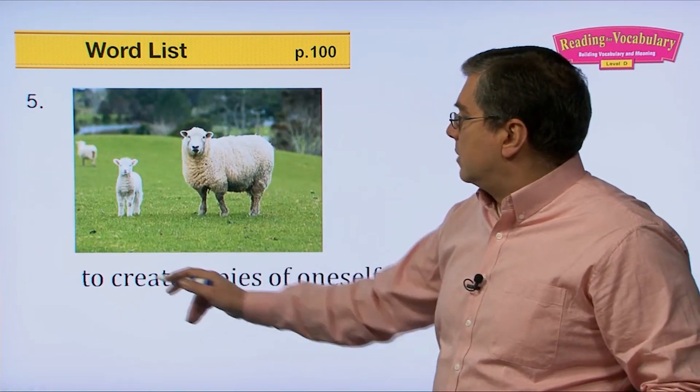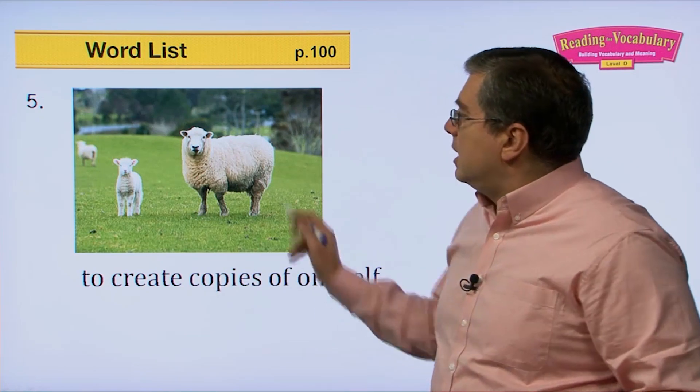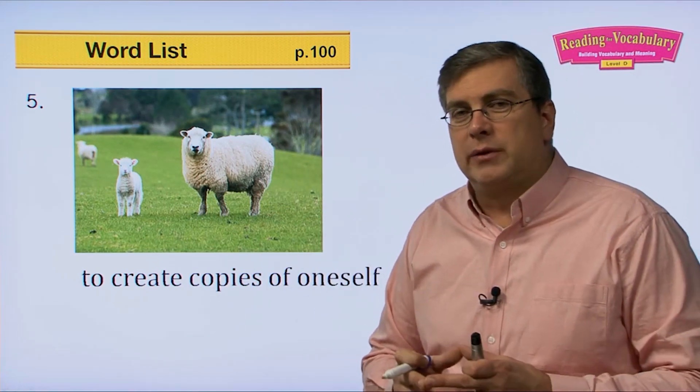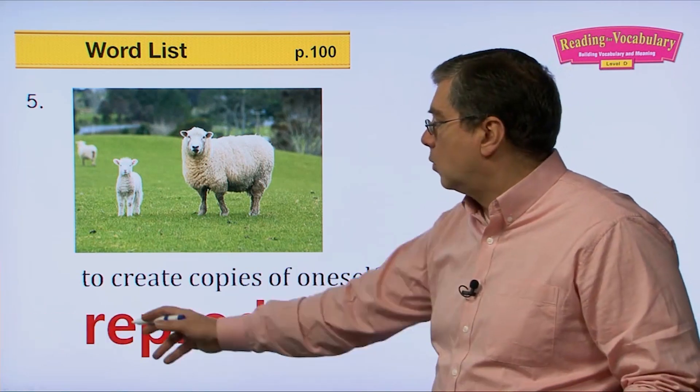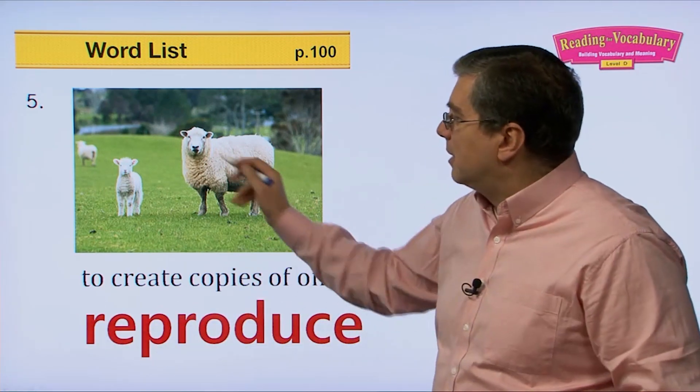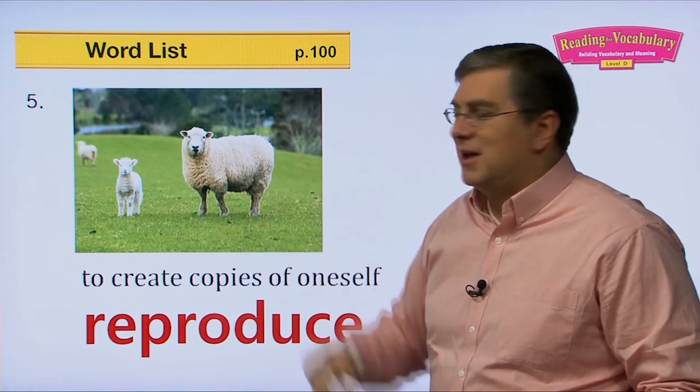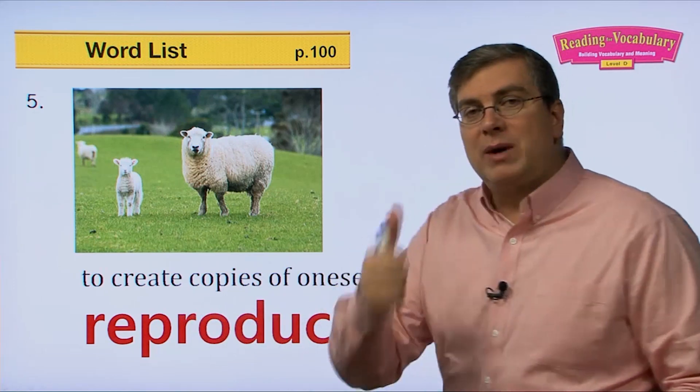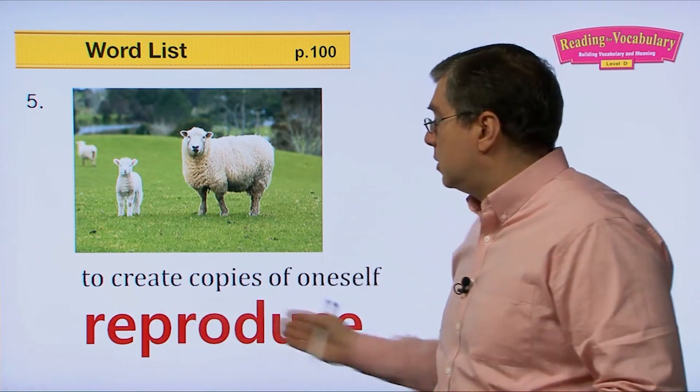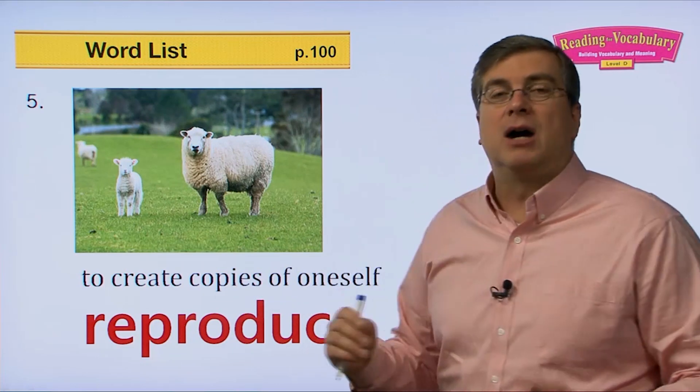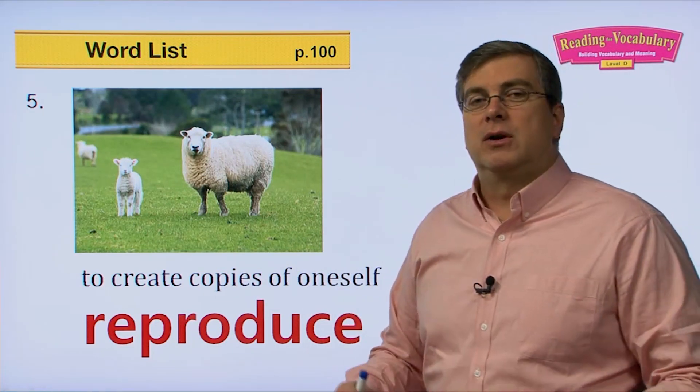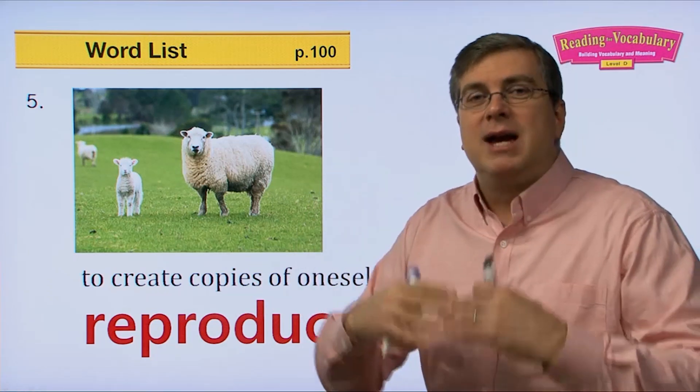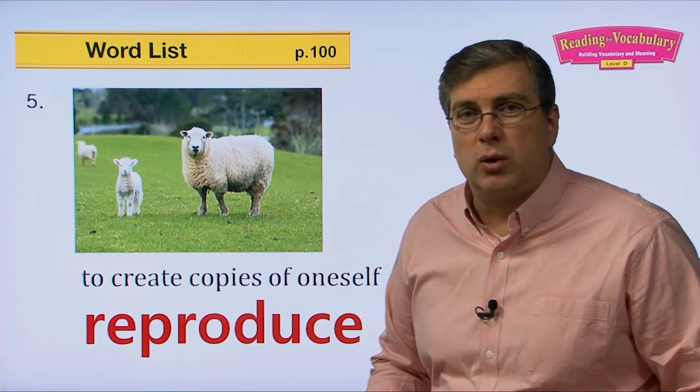Next one, to create copies of oneself. So when adult animals have babies, what are they doing? They are reproducing. So mama sheep will have a baby sheep, a lamb. Reproduce means to make copies of oneself. So when animals grow up, they become older, they become adults, then they can reproduce and have babies of their own.